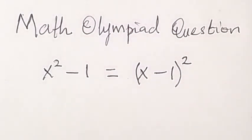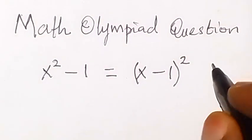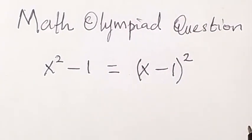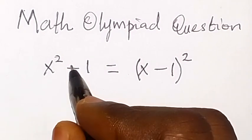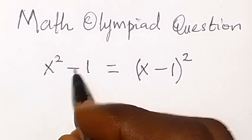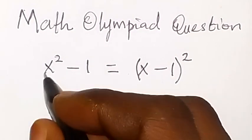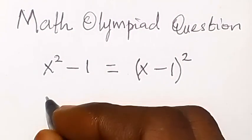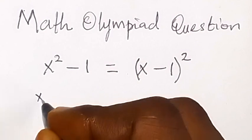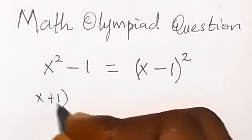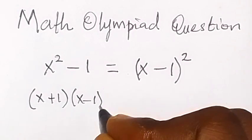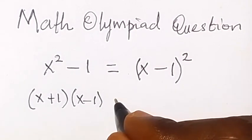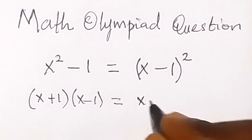Today's video — let's solve this Olympiad question where we are finding the value of x. Looking at the left-hand side, we have something in the form of a difference of two squares, because one squared is still one. So we can write the left-hand side as x plus one times x minus one — that is the difference of two squares.